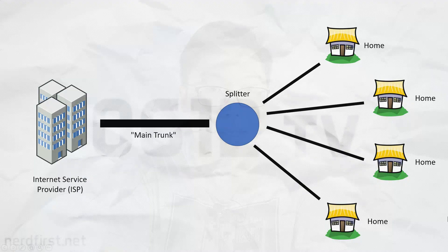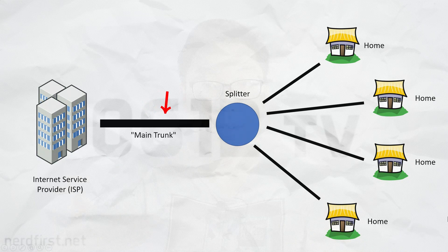As you can imagine, the infrastructure required to support this looks something like this. You need to have a main trunk coming in from the service provider. This trunk clearly needs to hold more than just your connection — it's going to be holding the connections of perhaps several houses around, or if you're in an apartment block, perhaps several floors or even the entire apartment complex.